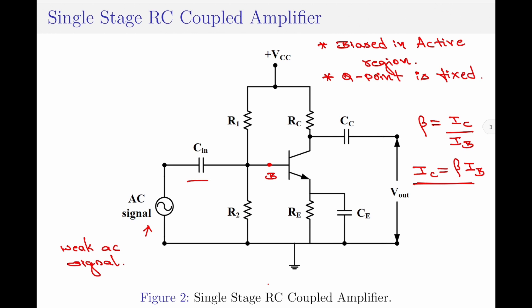This output signal is then passed through the coupling capacitor CC to the next stage, and the complete operation repeats itself in the next stage as well. Please note, this is a common emitter amplifier and therefore the voltage gain for this circuit should be greater than 1. Therefore, the output signal V-out will be greater than the input signal V-in. So the weak input AC signal is now amplified by the RC coupled amplifier circuit and appears at the output as V-out. This signal is further coupled to the next stage of the RC coupled amplifier where the same operation is repeated. One important aspect of the RC coupled amplifier circuit is that the output voltage is 180 degree phase shifted with respect to the input voltage. This is called phase reversal.